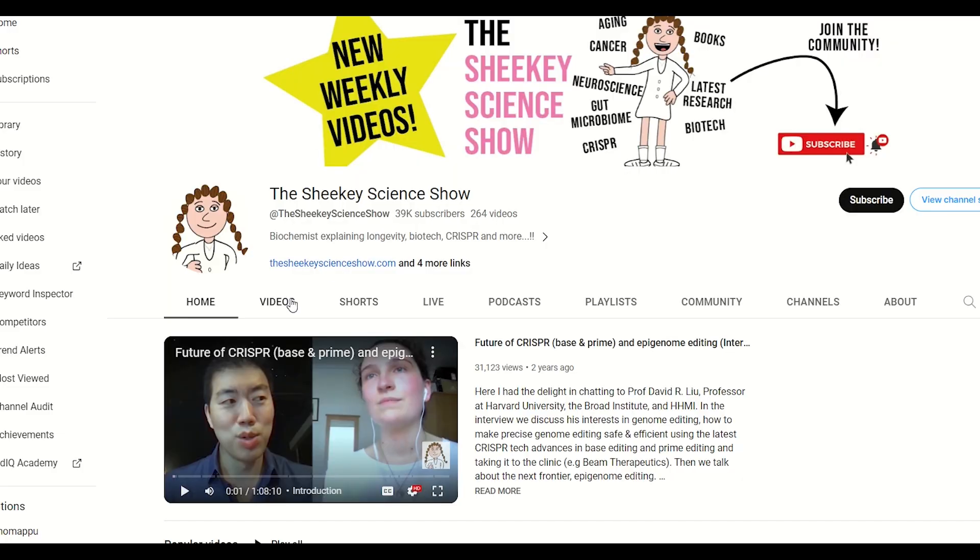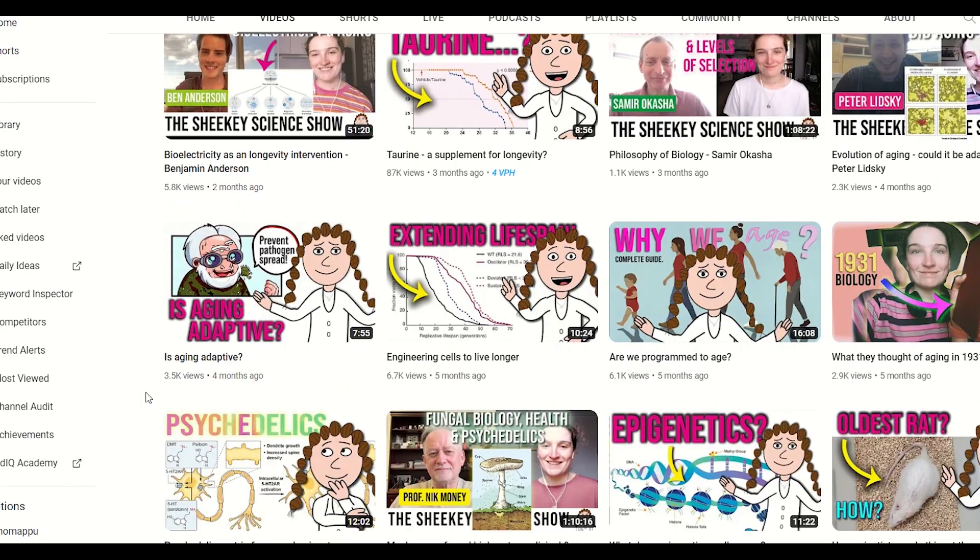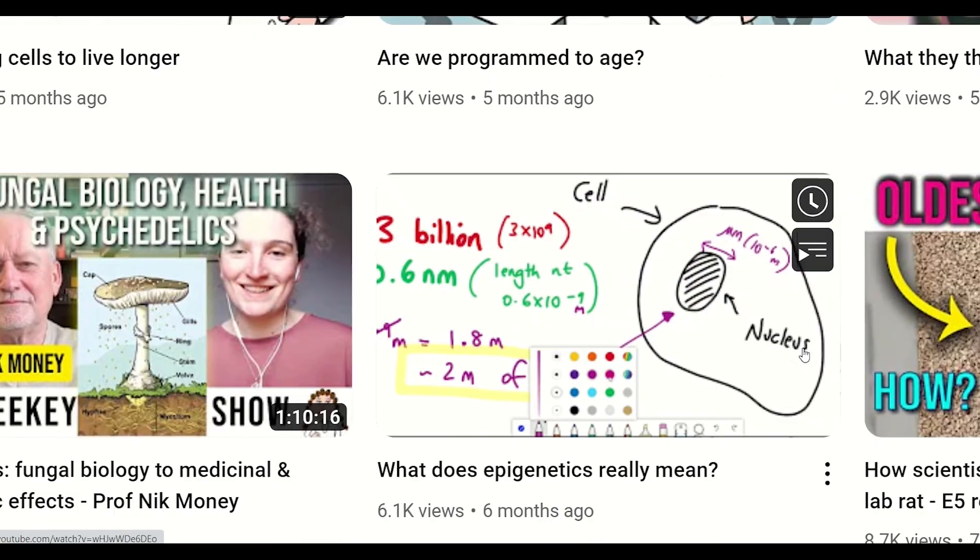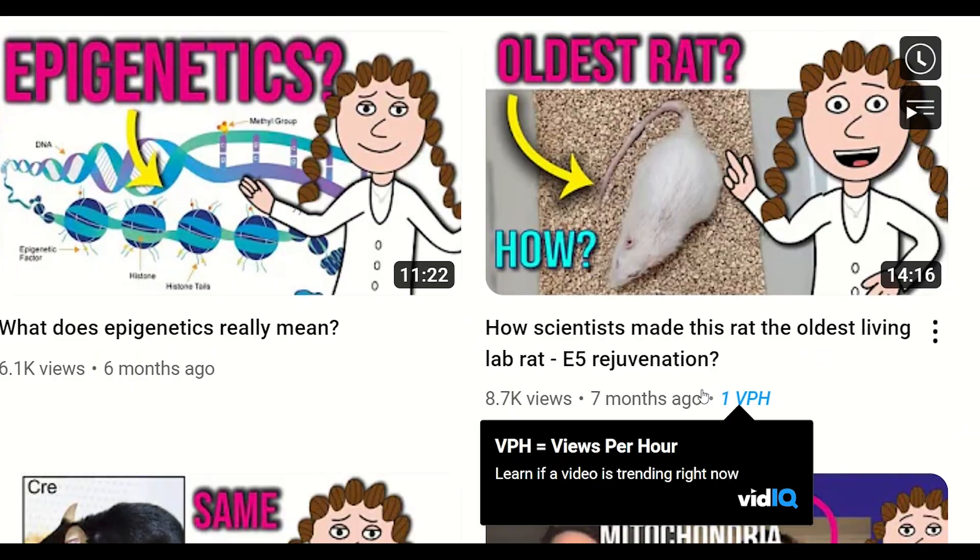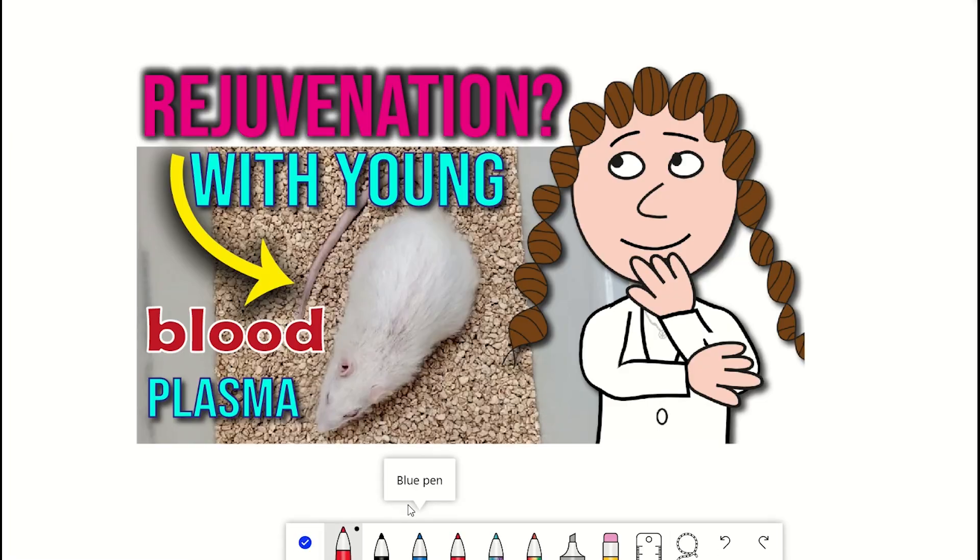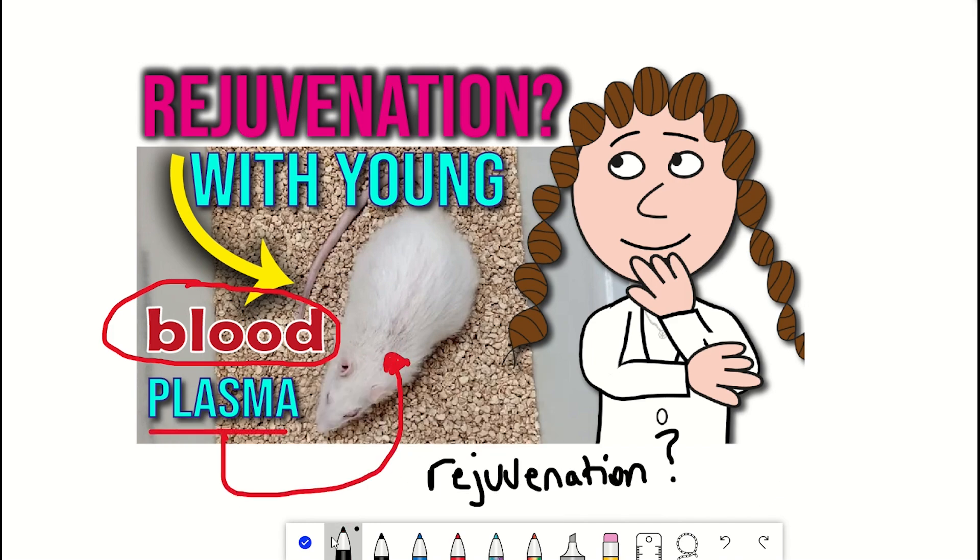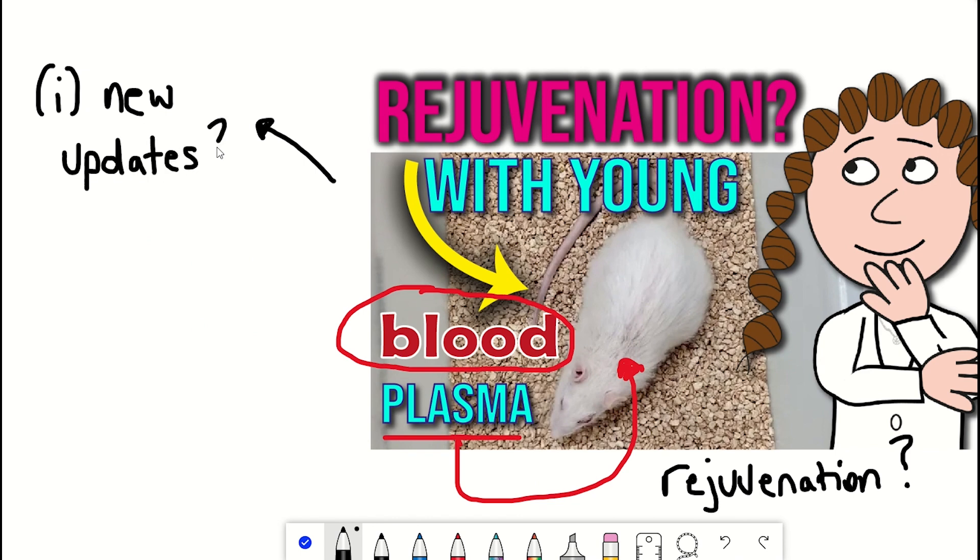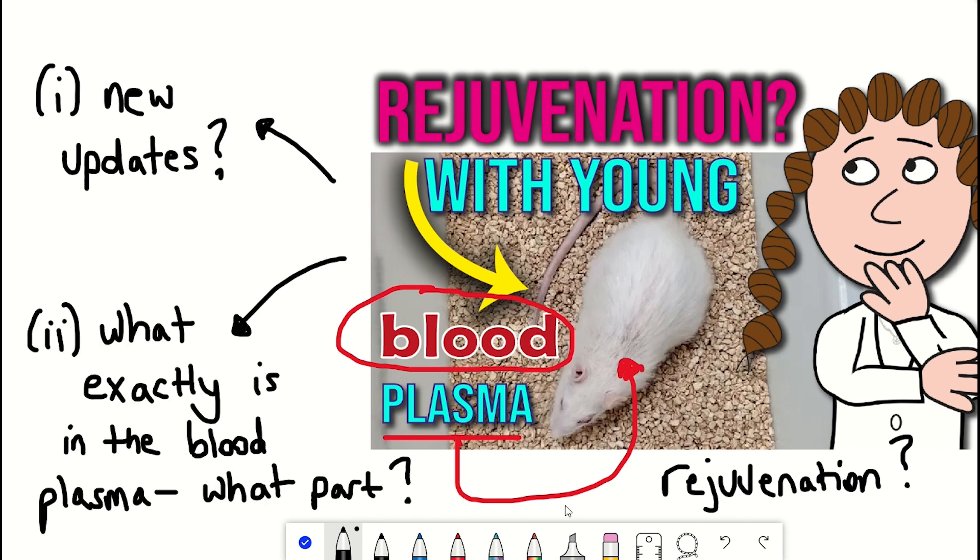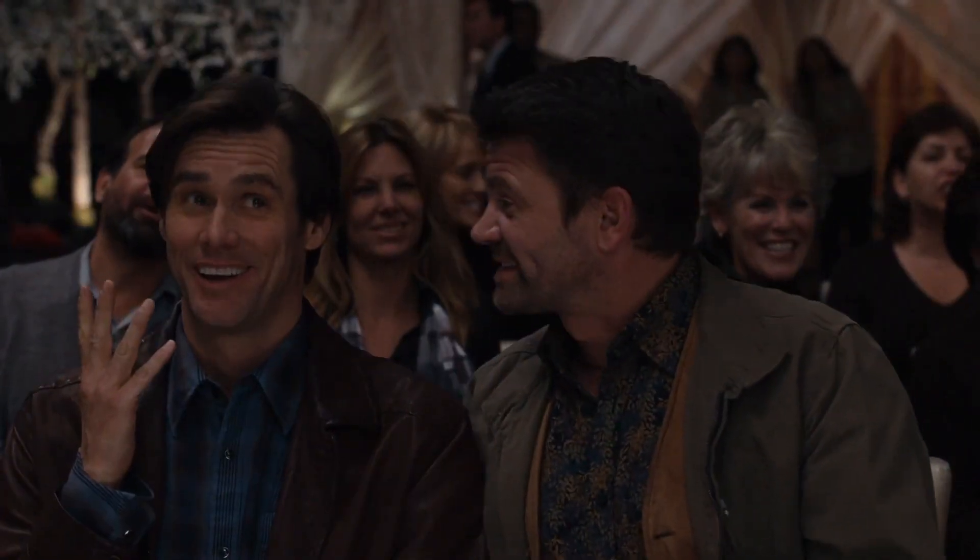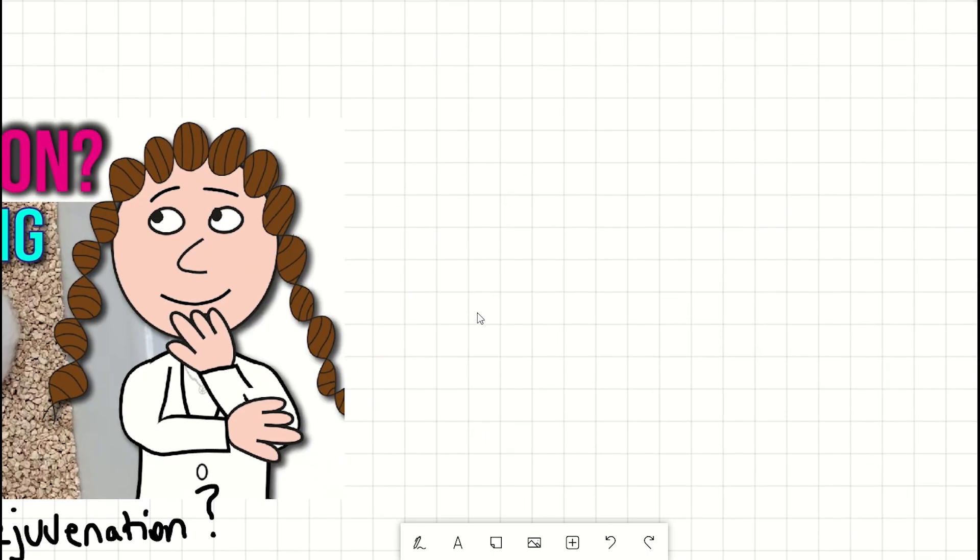That's right, many of you may remember earlier this year I made a video on the oldest living rat and now we have some updates, in particular what actually were these rats given and what changes were seen showing both some DNA methylation results and some glycan age data. Sound interesting? Great, let's go.